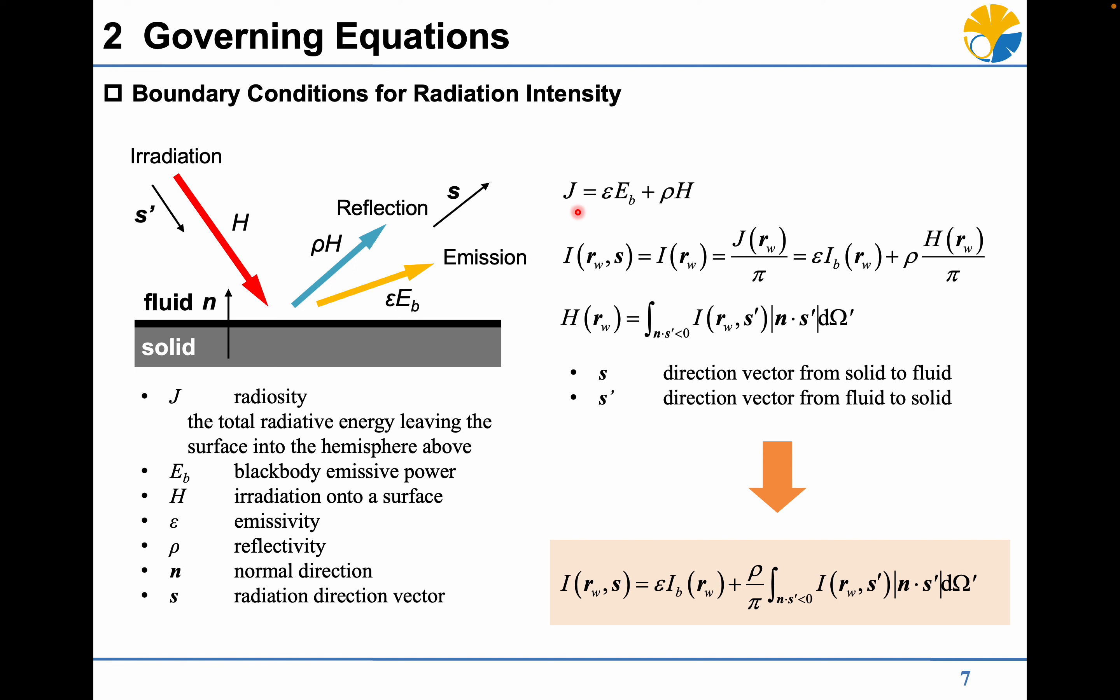The radiation intensity for outward direction consists of the reflective component according to the incoming radiation and the emissive component due to its blackbody emissive power. The final form of this boundary condition can be expressed as follows.